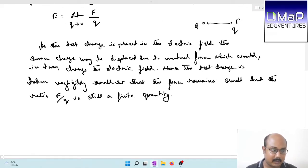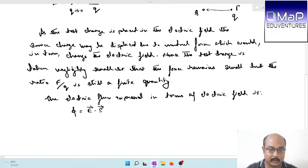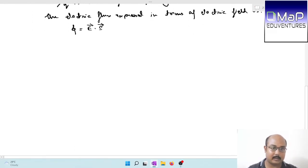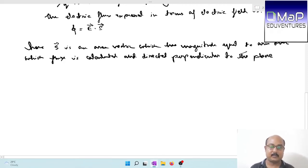The next part is express electric flux in terms of electric field. Phi equals E dot S, the dot product of electric field intensity and vector surface area. E dot S, where S is an area vector which has magnitude equal to the surface area and direction perpendicular to the plane. Electric flux is measured as the dot product of electric field and area vector.